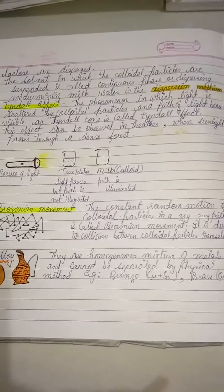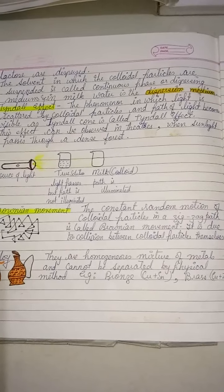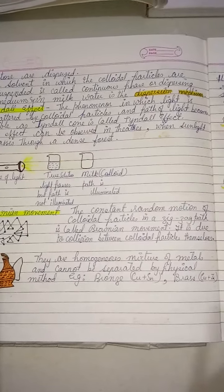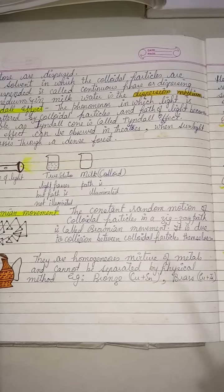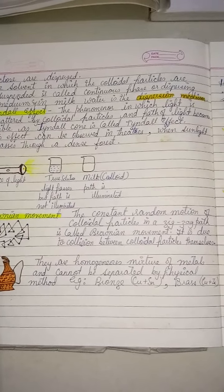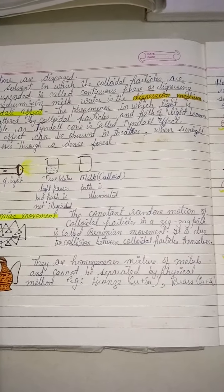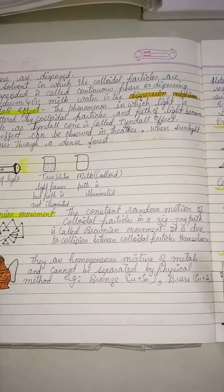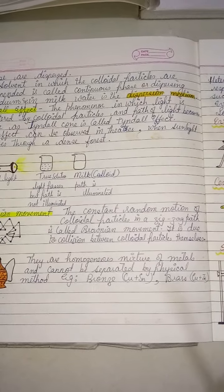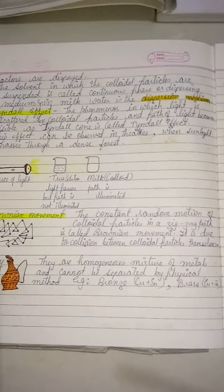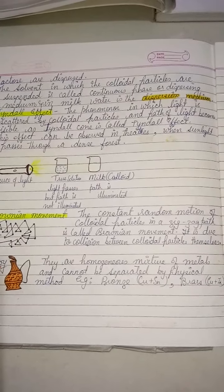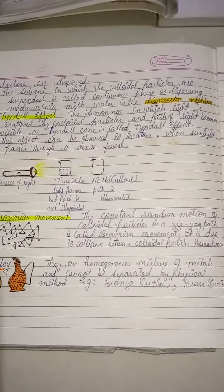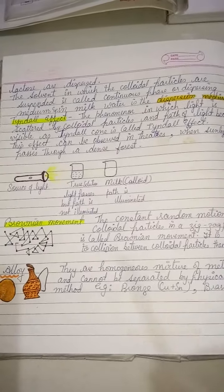The Tyndall effect: have you ever seen a beam of light in a theater? You can see a beam thrown on the screen and the path is visible where dust particles are scattered in the light. Another example is light visible through trees in a forest — light scatters off dust (colloidal) particles in the atmosphere. You can also observe it during fog or smoke, when a vehicle's headlight makes the path clearly visible.